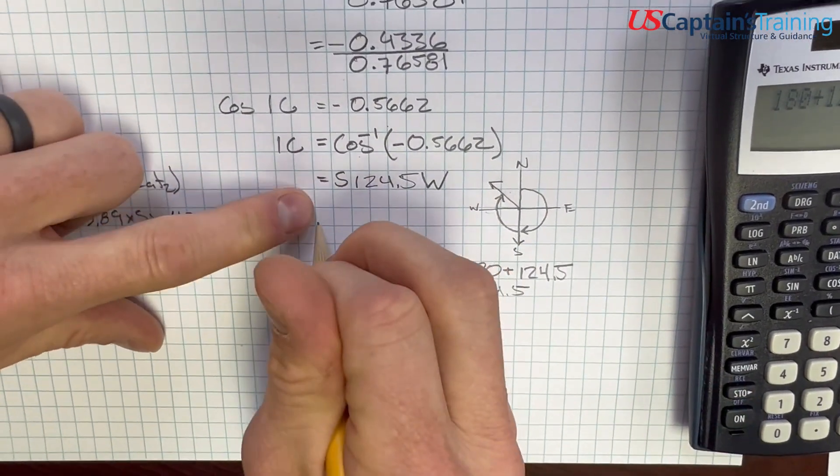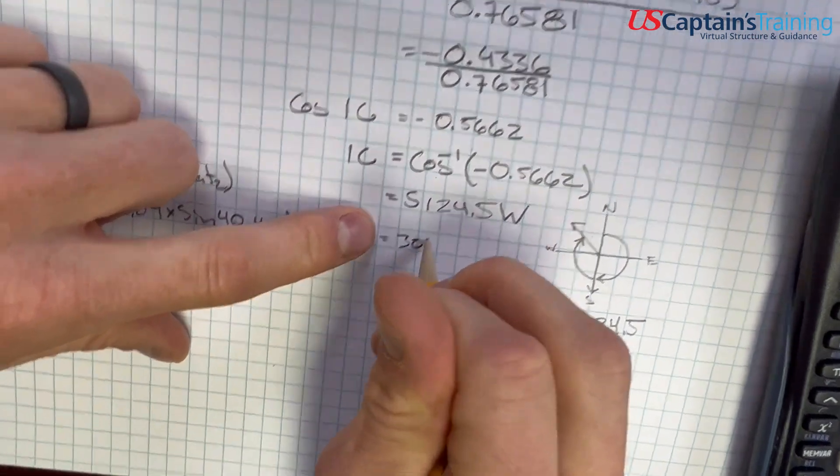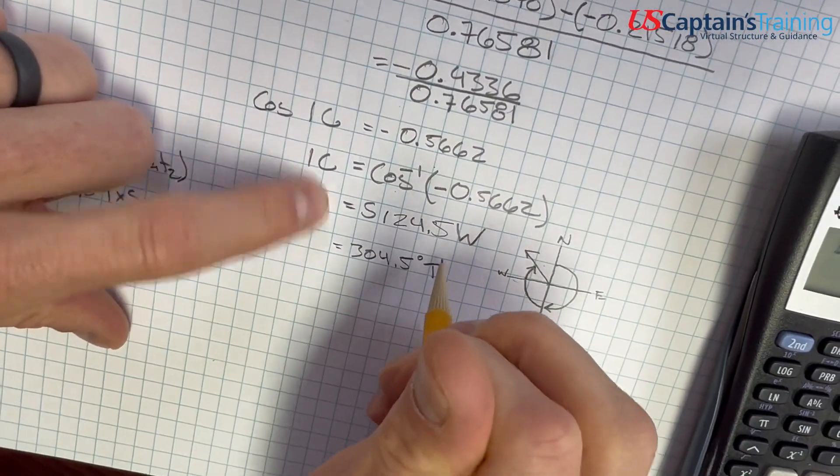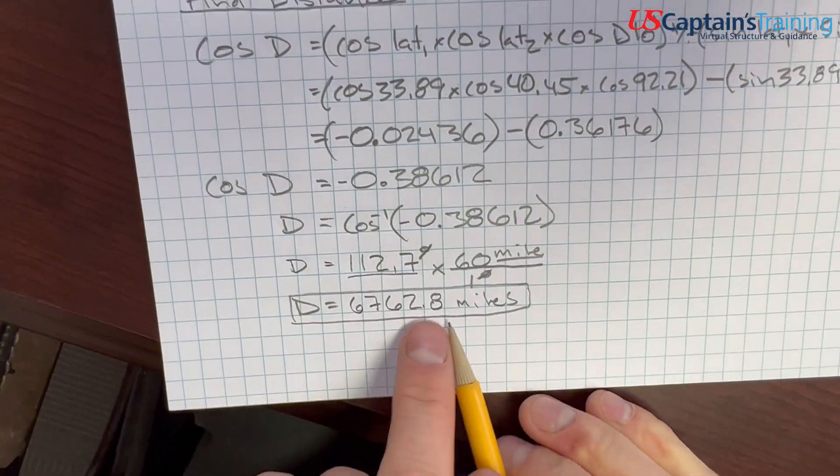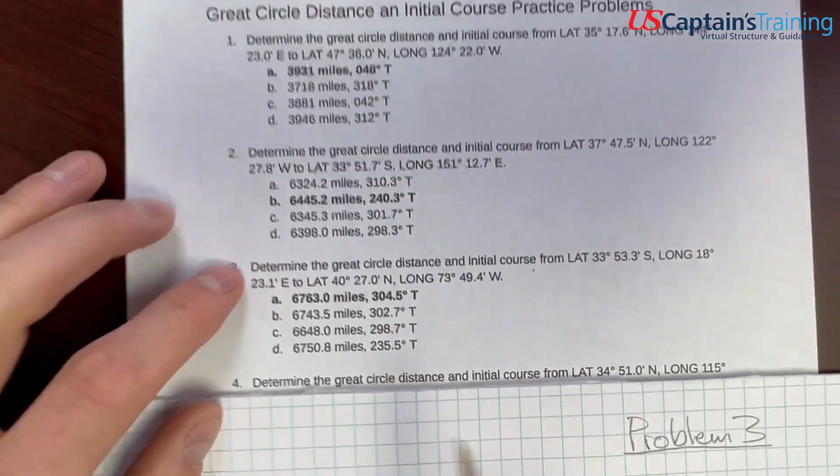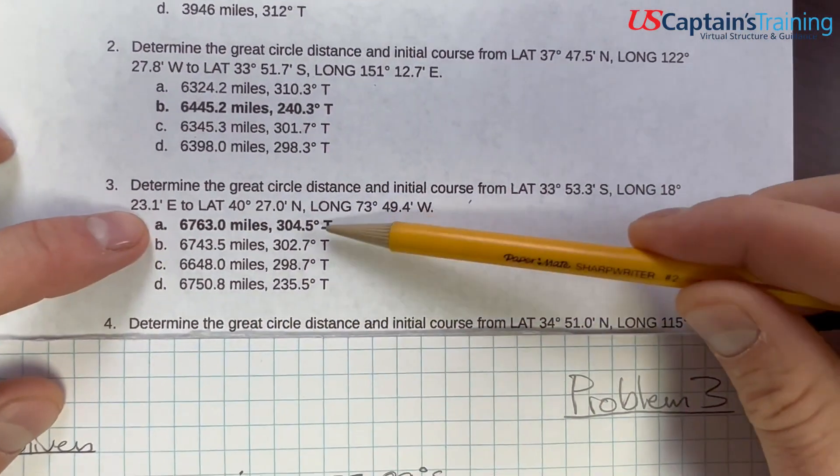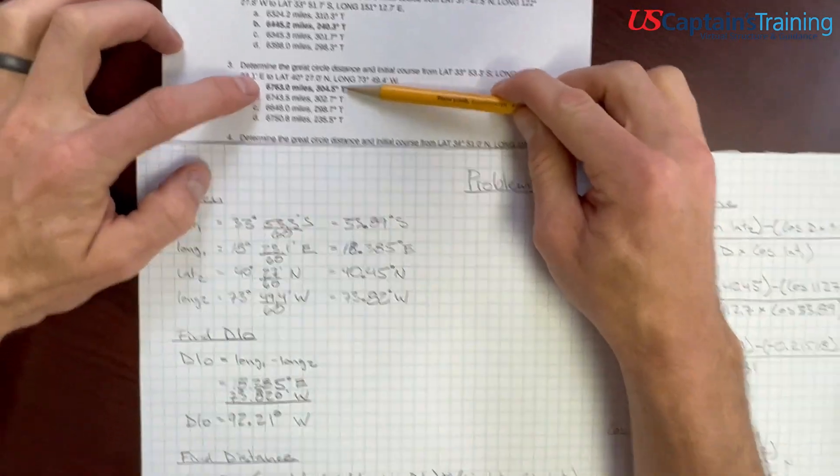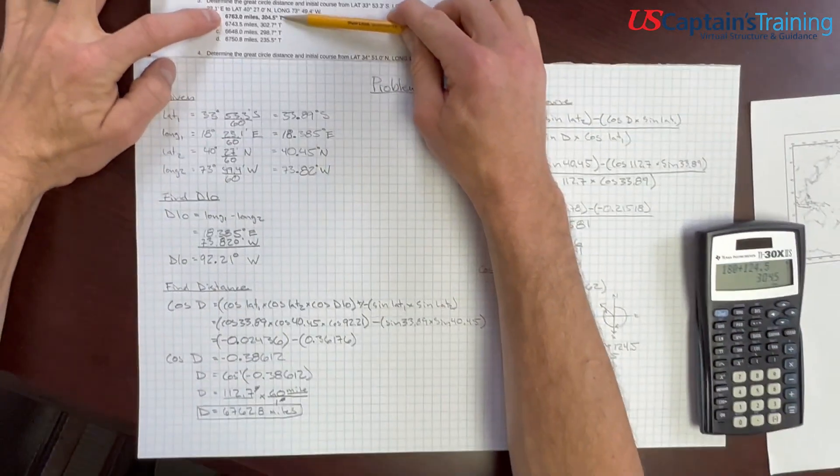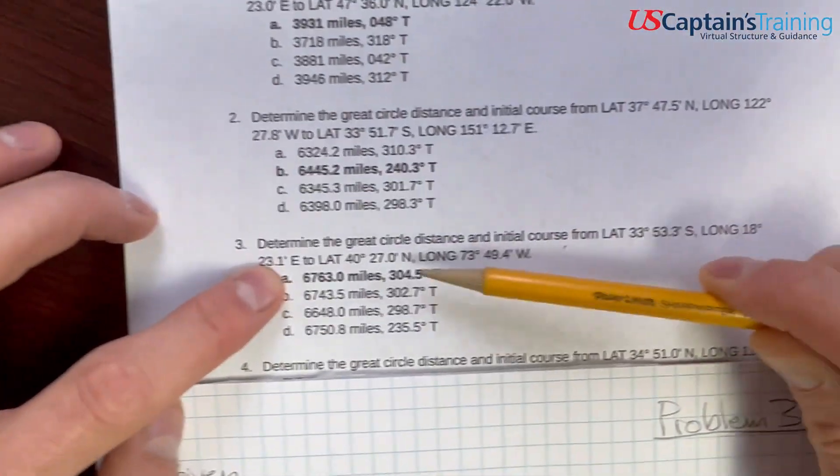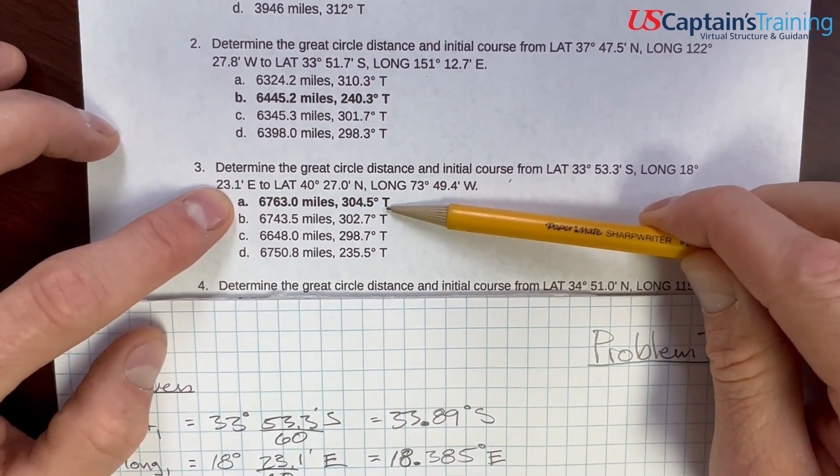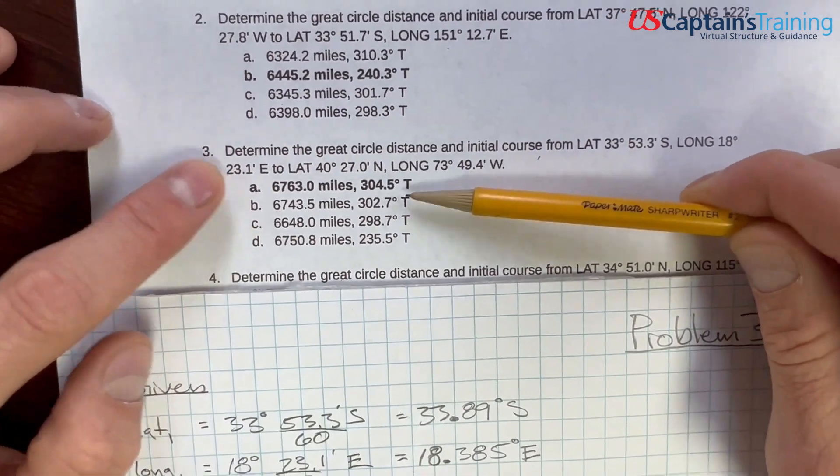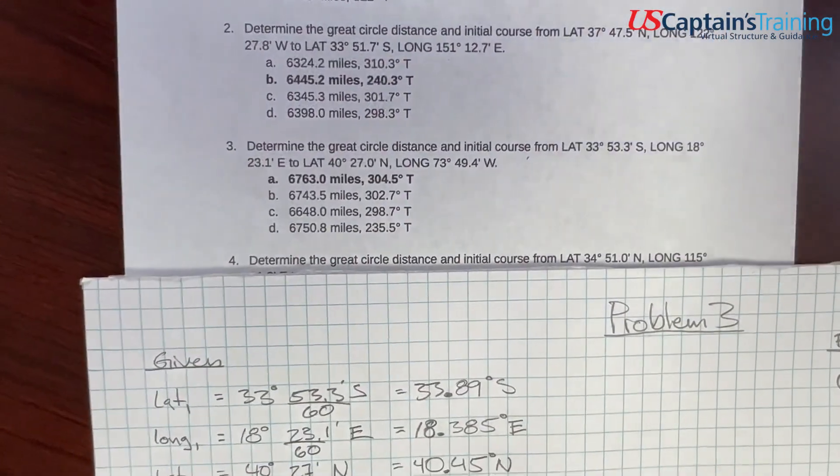So here, we're equal to 304.5 degrees true. So we got 304.5 true and 6762.8. Let's look. Where are we? There's the 304.5 and here's our 6763. This is off by, if we rounded it, we'd get exactly these numbers. So that's the answer to great circle distance and initial course practice problem three.